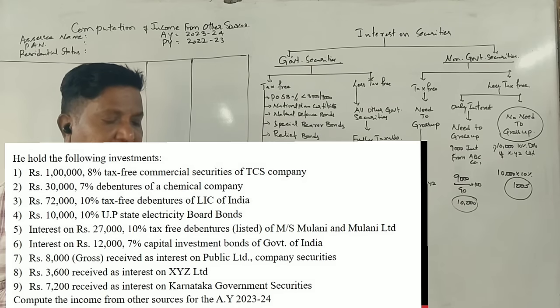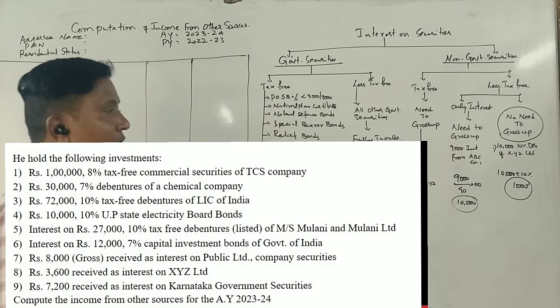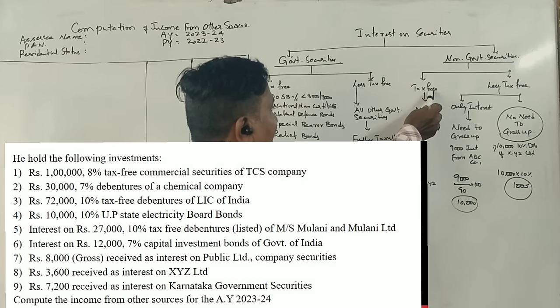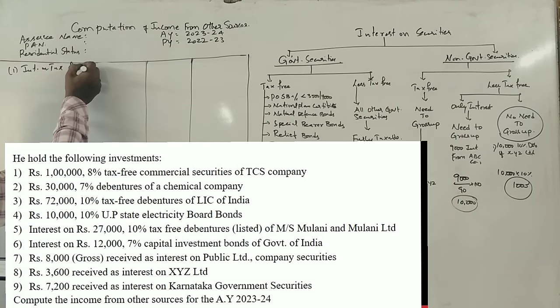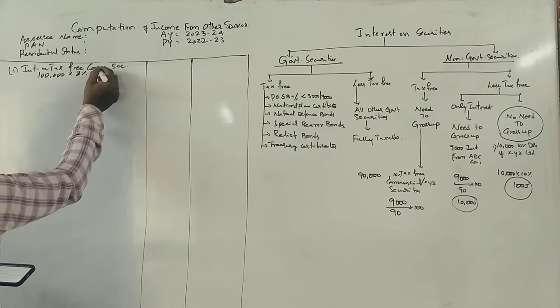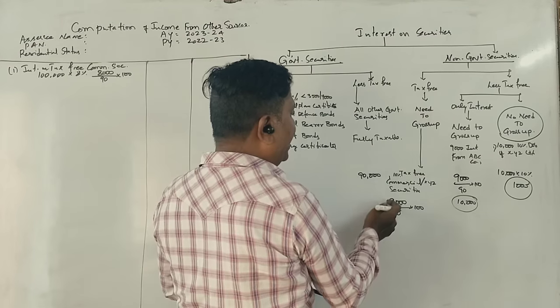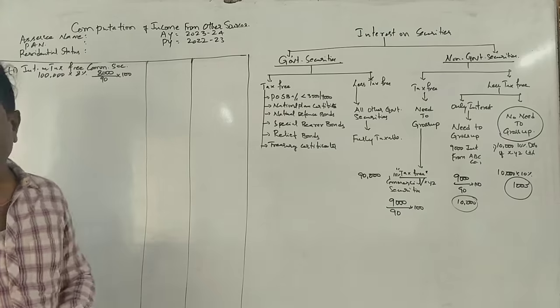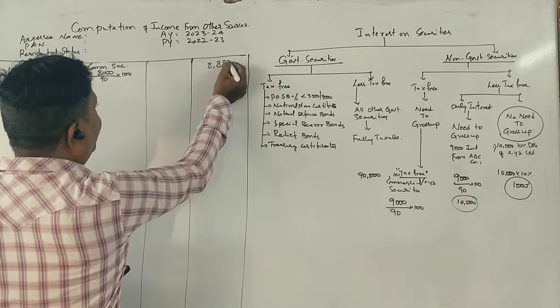Income from other sources: Rs. 1 lakh, 8% tax-free commercial securities of TCS company. Interest on tax-free commercial securities: 1 lakh times 8% equals Rs. 8,000, divided by 90 into 100 equals Rs. 8,888. That is fully taxable.